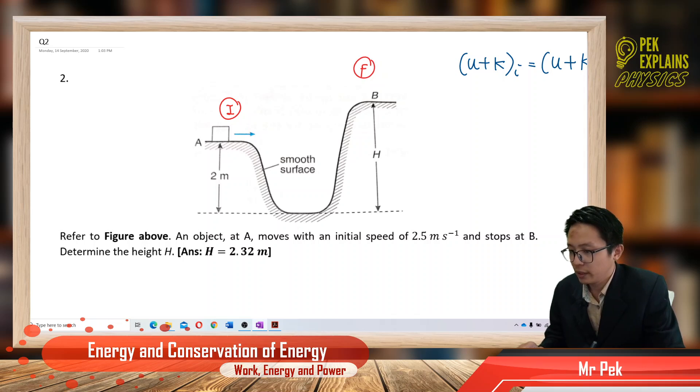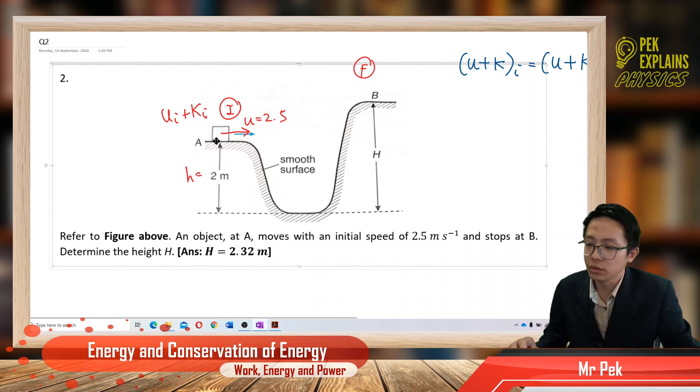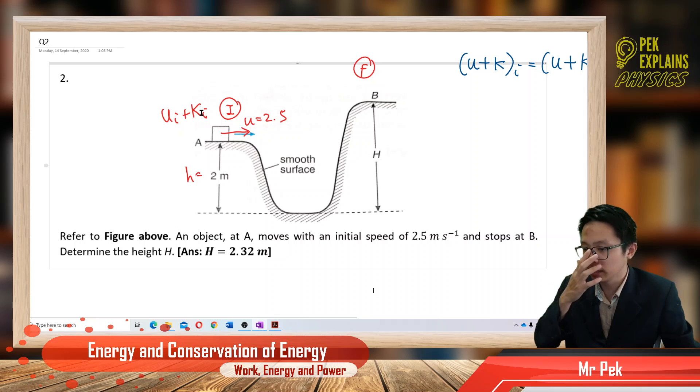Over here, it has the initial velocity which is 2.5, and it has certain height. So we can say initially it has both potential energy because of the height and also it has kinetic energy because of the initial speed. It has the height and it has the velocity, so it has both gravitational potential energy and kinetic energy.